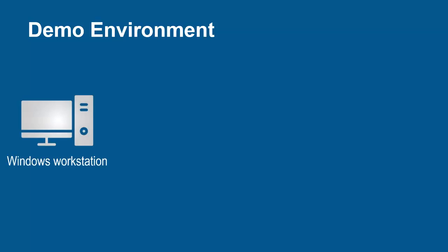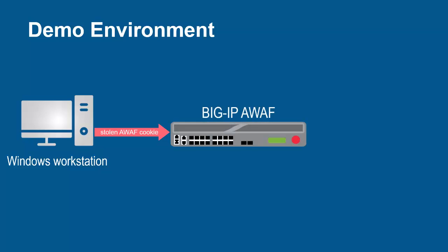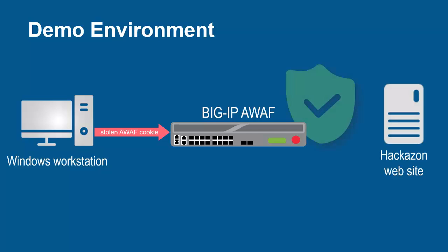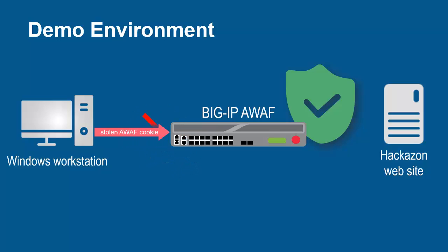The environment for this demo contains three devices. A Windows workstation will be used to attempt to steal both the session cookie value and the BIG-IP Advanced Web cookie value from unsuspecting victims. These requests will arrive at the F5 BIG-IP system running Advanced Web, which sits in front of and protects the backend web application. Using its full proxy architecture, it examines every request and can identify when stolen BIG-IP Advanced Web cookies are being used, and prevent those requests from going to the web servers.